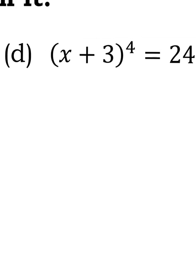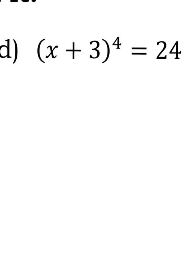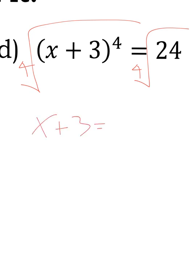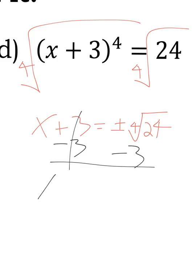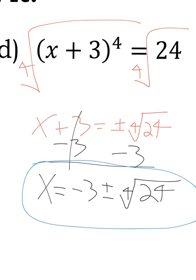For part D, very similar to part B, I need to 4th root the other side. Will the 4th root of 24 simplify? No, it won't. So x + 3 = ±⁴√24. And then, it's a negative 3 this time. So that's negative 3 plus or minus the 4th root of 24. That's the final answer.